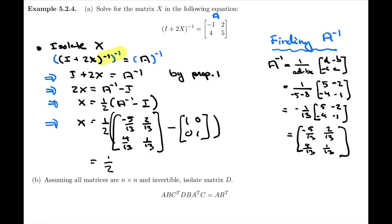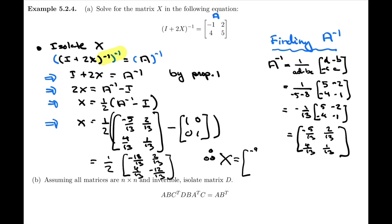Our next step yields one half times the result of the subtraction. Negative 5 over 13 minus 13 over 13 is negative 18 over 13. Then 2 over 13, 4 over 13 minus 0 is 4 over 13. And finally, 1 over 13 minus 13 over 13 is negative 12 over 13.